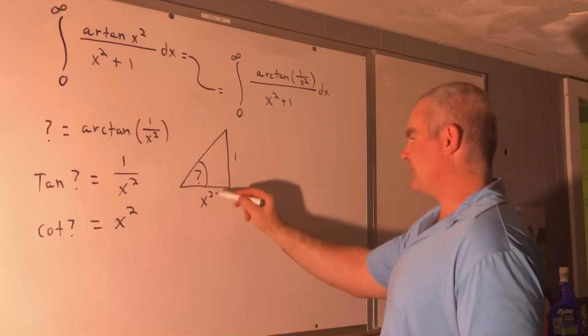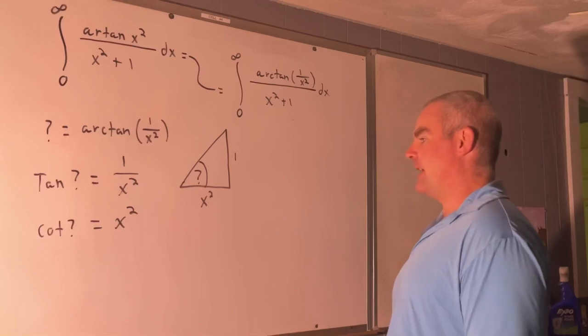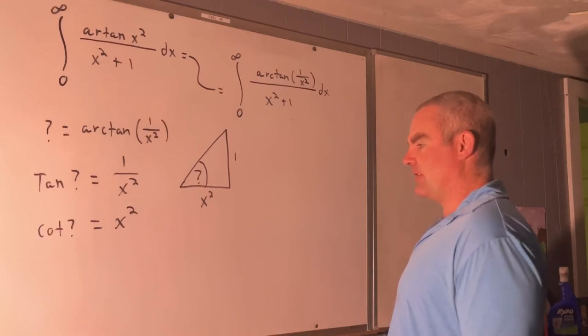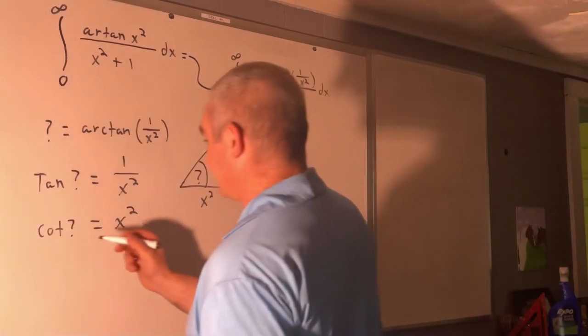See, the cotangent of this is going to be x squared. Now we're going to use the trig identity that cotangent theta is equal to tangent of pi over 2 minus theta.